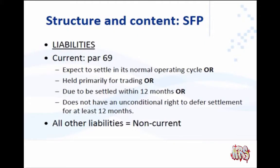Paragraph 69 tells us when liabilities are presented as current liabilities, and then the other liabilities are non-current. Liabilities are current when we expect to settle in the normal operating cycle of the business, or it is held primarily for trading, or it is due to be settled within 12 months, or the entity does not have an unconditional right to defer settlement for at least 12 months after year end. All other liabilities are non-current.